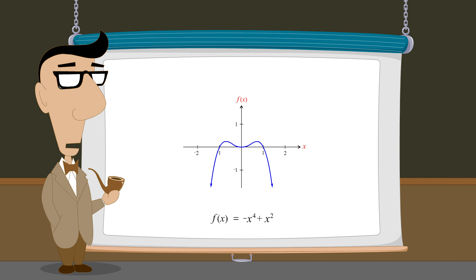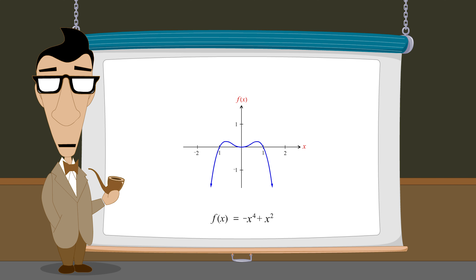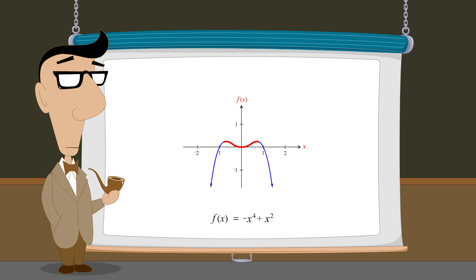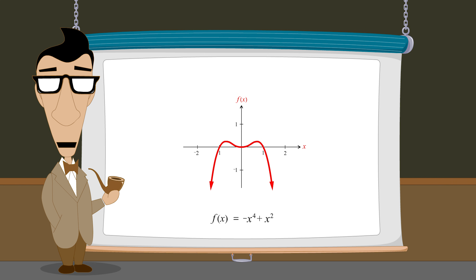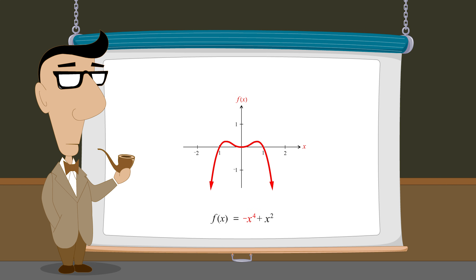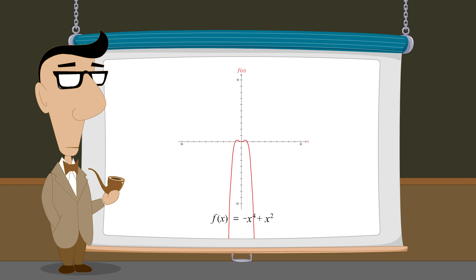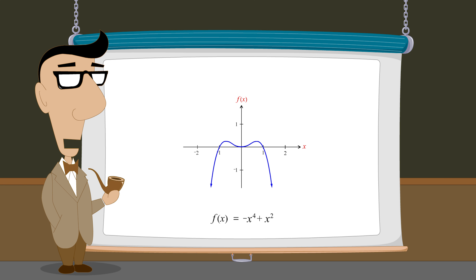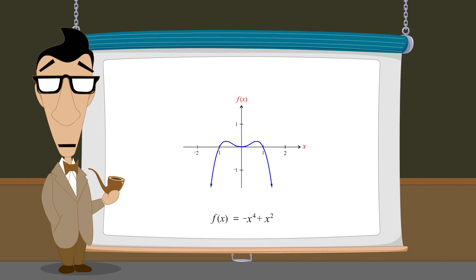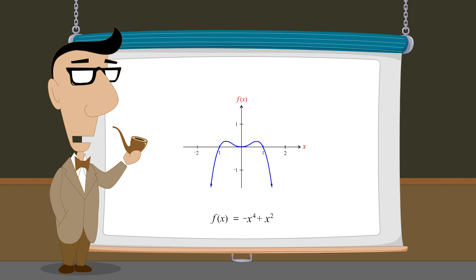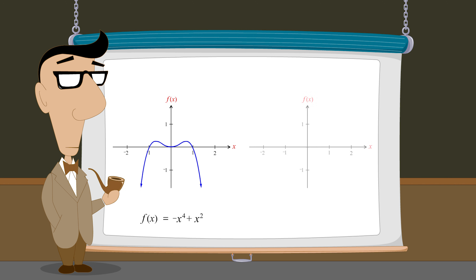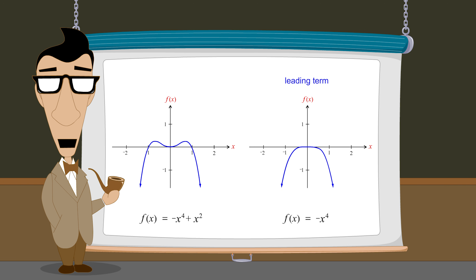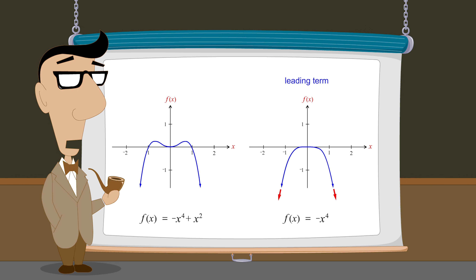So by adding these two monomial functions we produce a graph with a more complicated shape. As x gets further from the origin, the graph initially grows in the positive direction but then reverses direction, becoming negative. From then on, negative x to the fourth power increases much faster than x-squared, causing the graph's end-behavior to grow without limit in the negative direction. We can always predict the end-behavior of a polynomial function's graph by looking at the end-behavior of the leading term. Since the end-behavior of the leading term, negative x to the fourth power, becomes infinitely negative for both positive and negative x, the end-behavior of the polynomial does so as well.